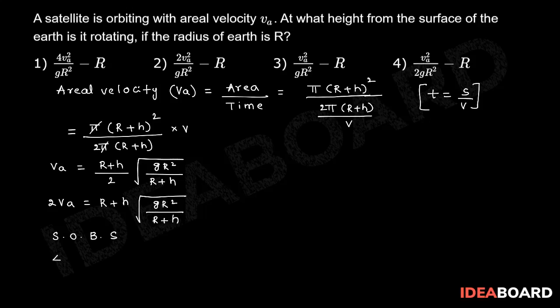So squaring on both sides, this is 4 Va square that equals r plus h whole square times gr square by r plus h. R plus h gets cancelled.